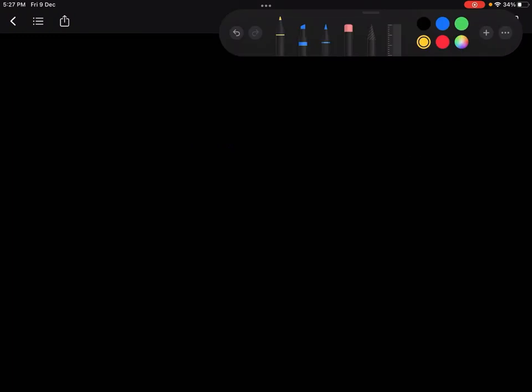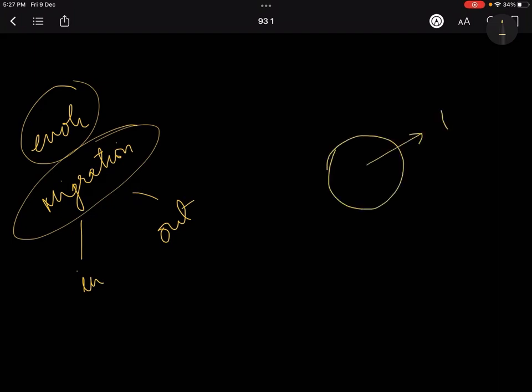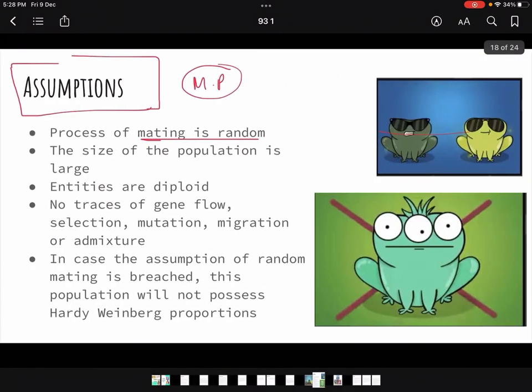Hardy-Weinberg law is saying we are trying to achieve a population where there is no evolutionary trends that are playing a part. That means there is no migration that is happening, because if migration happens, whether it is in migration or out migration, the allelic frequencies or genotypic characteristics are going to shuffle. For example, if it's an African island and people from the white communities come and start to reproduce, that is how migration also plays a part.